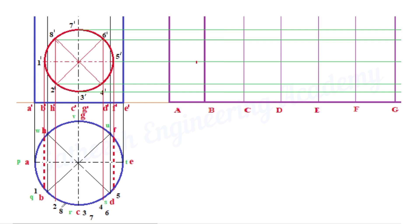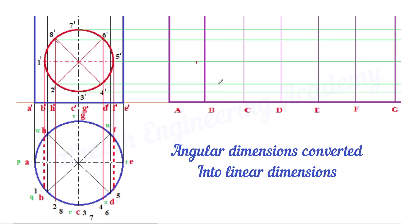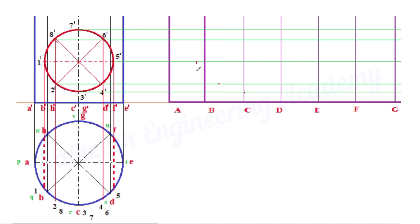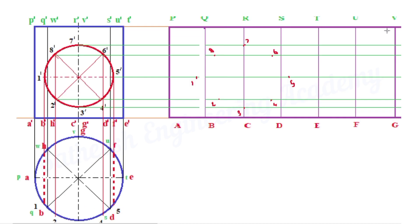Measure the distance between B and 1. Transfer the same distance in the developmental area from B and assign 1. Similarly between B to C mark number 2. Number 3 lies exactly on line C. Mention all points 1 to 8 in the development.